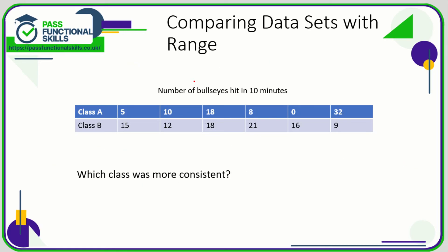Now we're comparing data sets with range. The range is the difference between the highest and the lowest value. For Class A — the number of bullseyes hit in ten minutes — it goes from zero to thirty-two, so the range is thirty-two. For Class B, the range is twenty-one take away nine, which is twelve. The more consistent class is the one with the lower range: a low range equals consistent, a large range equals not very consistent.